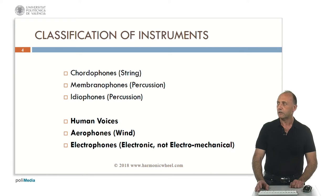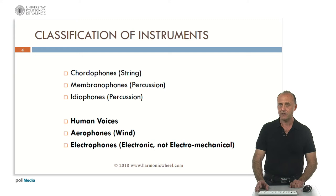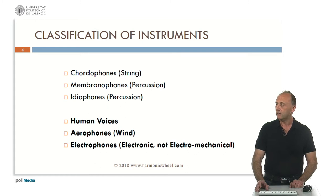From the classification of instruments, in another presentation we studied the chordophones or string instruments, membranophones which are percussion, and idiophones which are also percussion. In this presentation we are going to analyze the human voices, the aerophones that is wind instruments, and the electrophones. Here we will consider only pure electronic instruments and not electromechanical ones; those will be classified in the other groups.